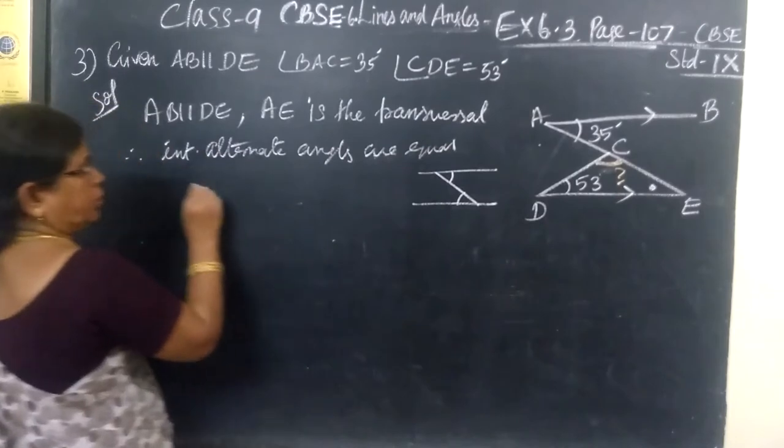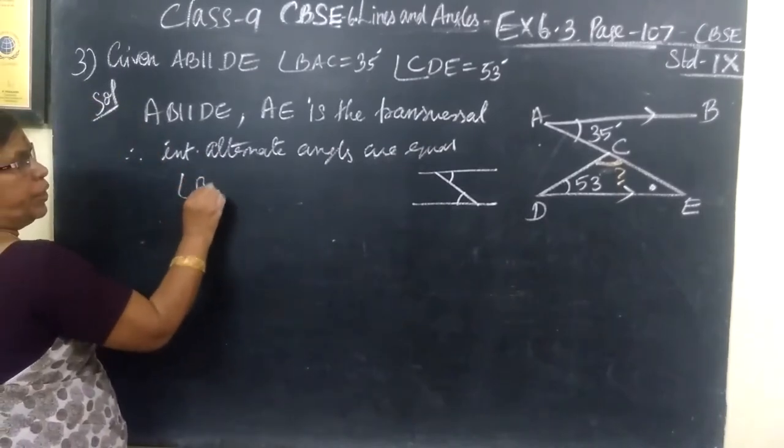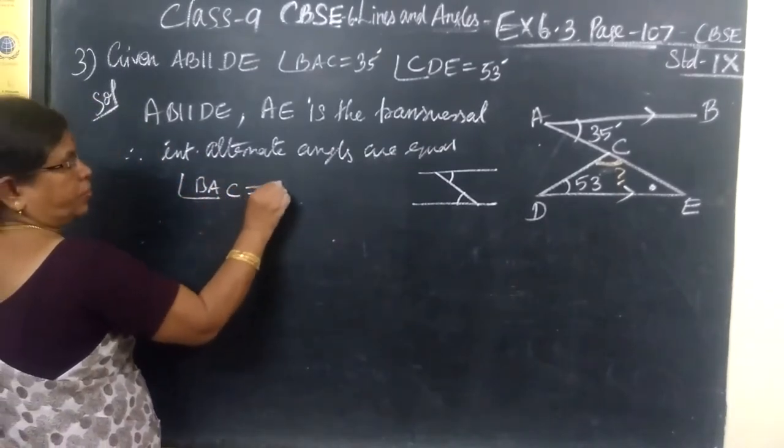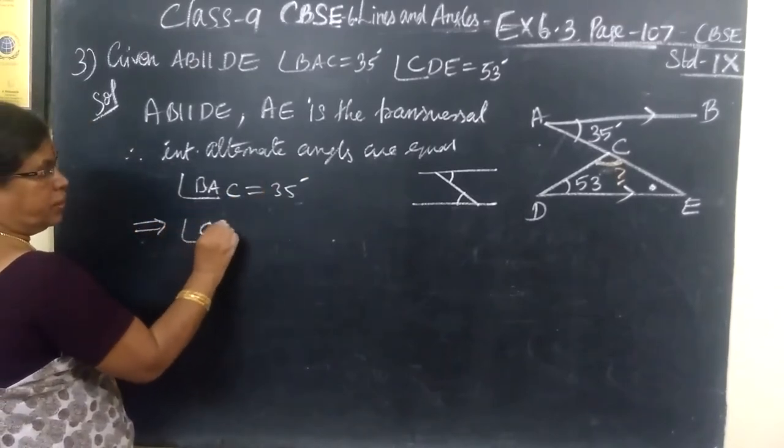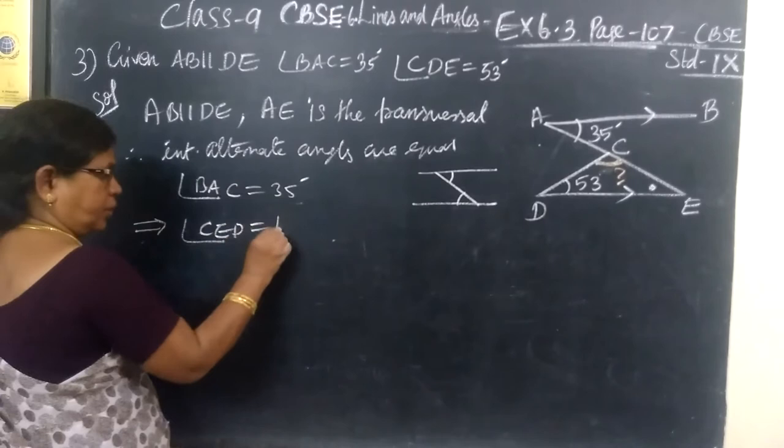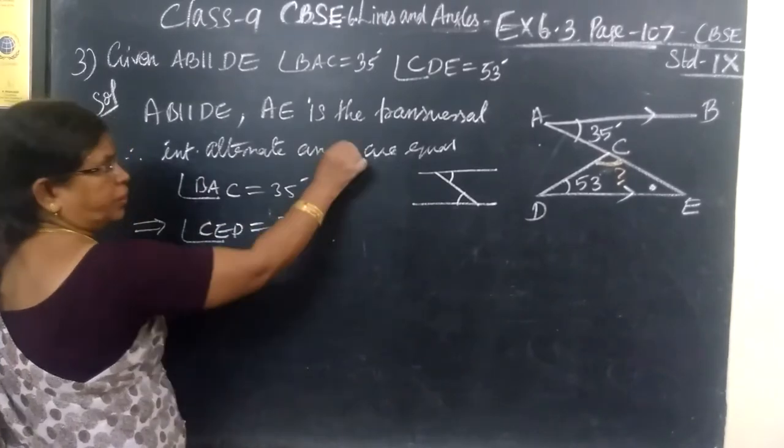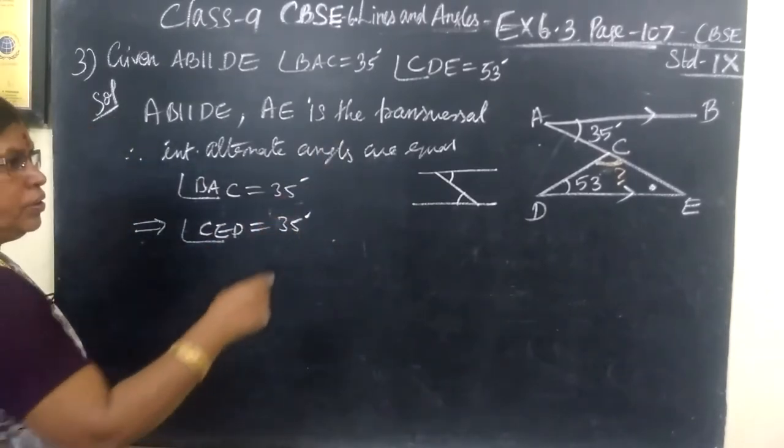Using this property, angle BAC equals 35 degrees implies angle CED also equals 35 degrees, because alternate angles are equal.